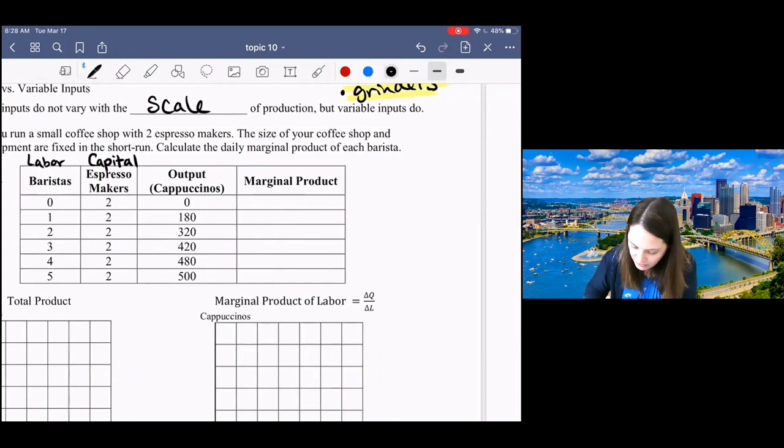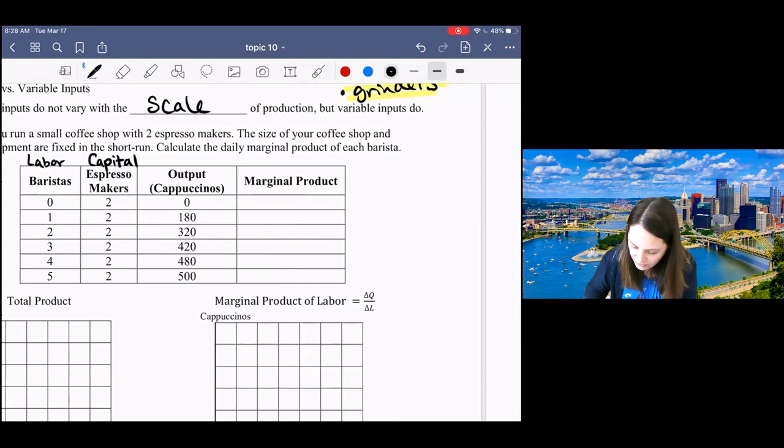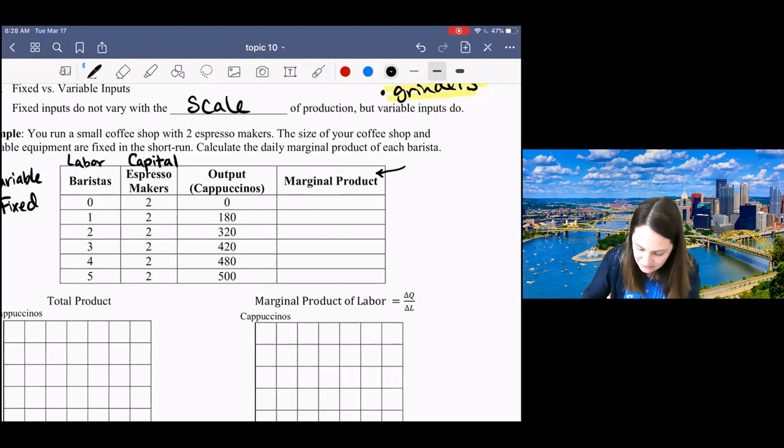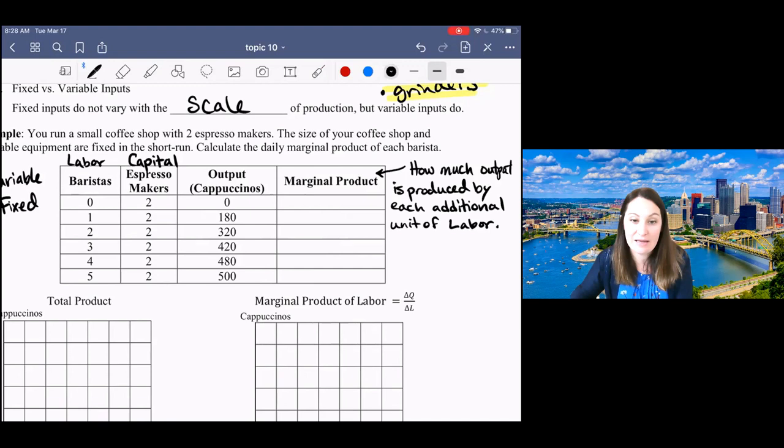We've got our production function, we've got labor and capital and some output. Now what we'd like to do is think more carefully about the marginal product of labor. Marginal product describes how much output is produced by each additional unit of an input. In this case, we're always going to be talking about labor or variable input. So as I hire more workers, how many more cappuccinos does each worker produce?